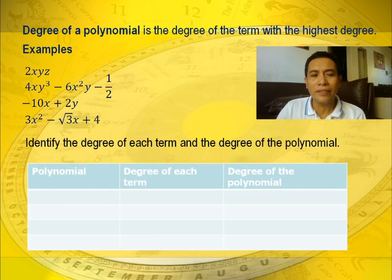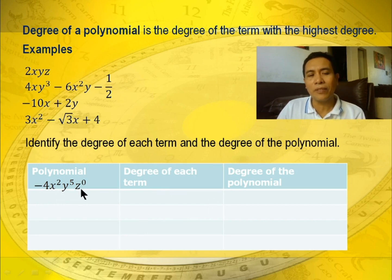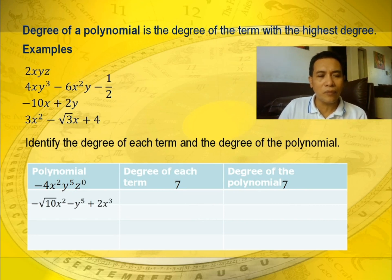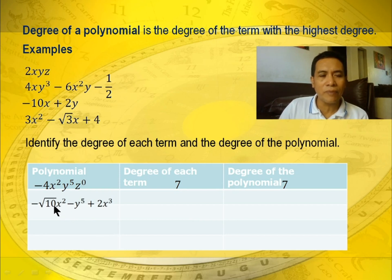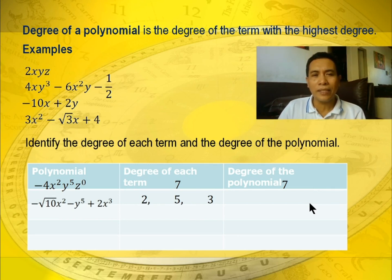We have a table: polynomial, degree of each term, and degree of the polynomial. First: negative 4x squared y to the fifth times 0 raised to 0 — a monomial. Adding exponents of the variables: 2 plus 5 equals 7, so the degree of the term and the degree of the polynomial are both 7. Second: the square root of 10 times x squared minus y to the fifth plus 2x cubed — a trinomial. Degrees are 2, 5, and 3, so the degree of the polynomial is 5.